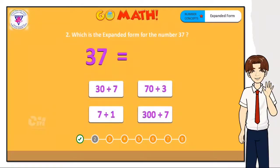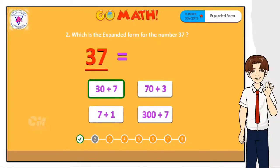Which is the expanded form for the number 37? The digit 3 is in the tens place, so the value of 3 is 30. The digit 7 is in the ones place, so the value of 7 is 7. Together, the expanded form for the number 37 is 30 plus 7. You are right — the correct answer is 30 plus 7.